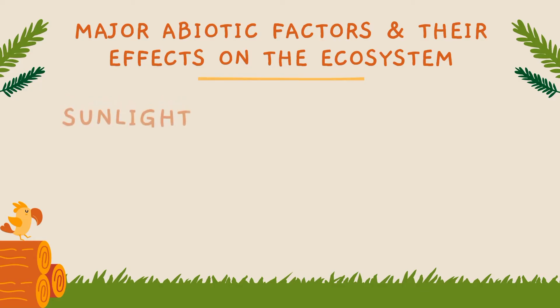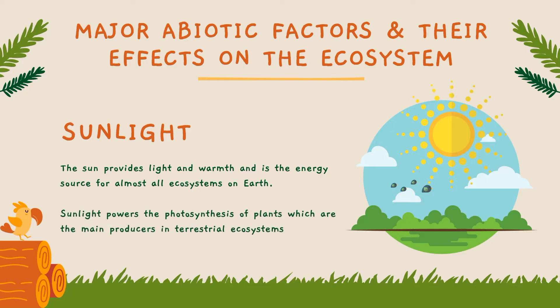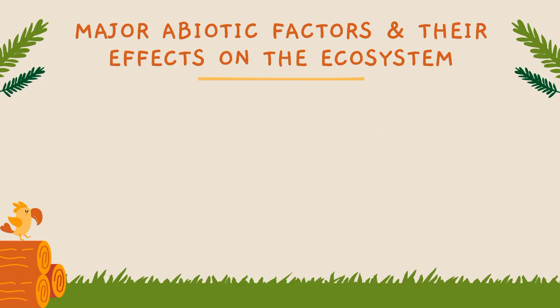First, we have sunlight. Sunlight is used in ecosystems to heat the atmosphere and to evaporate and transpire water into the atmosphere. Light energy is also necessary for photosynthesis — a process used by bacteria, algae, and plants to convert carbon dioxide into cellular energy.